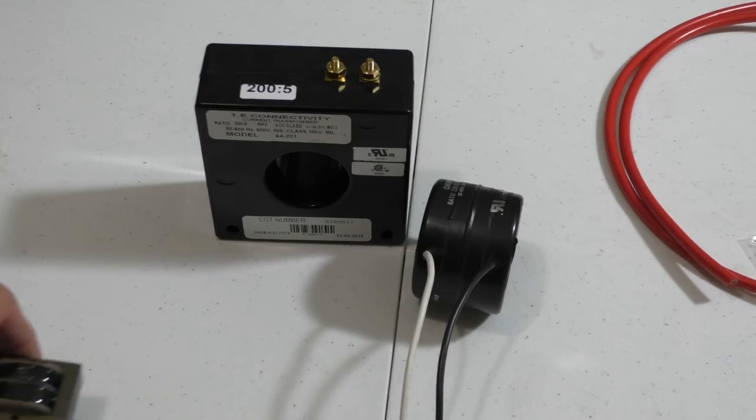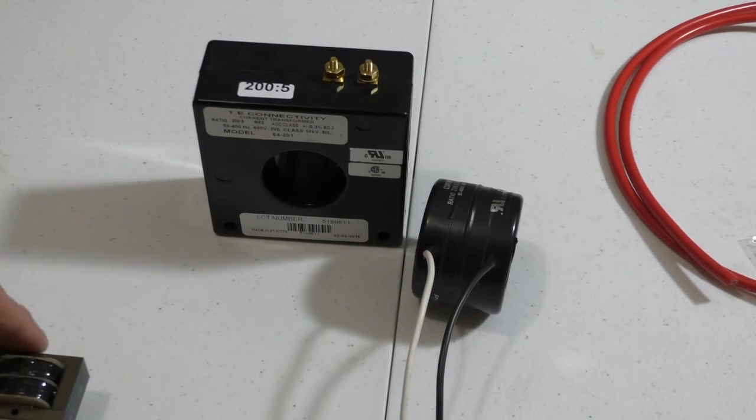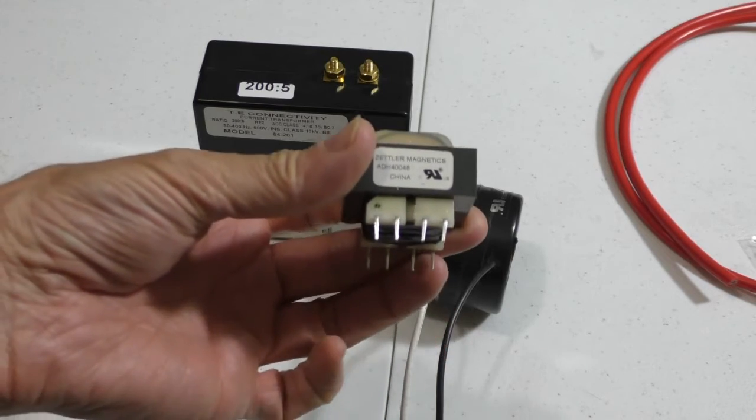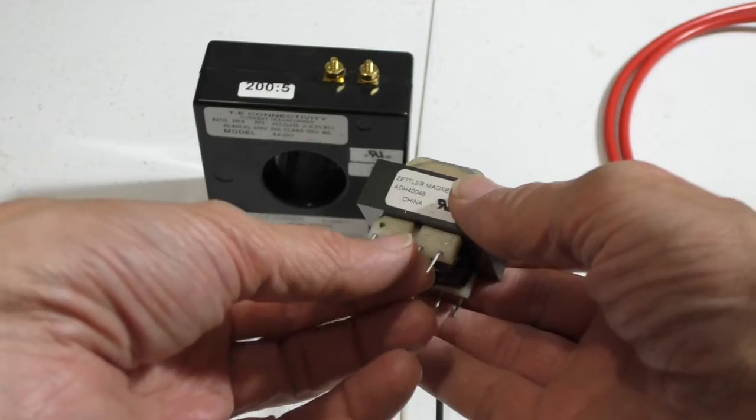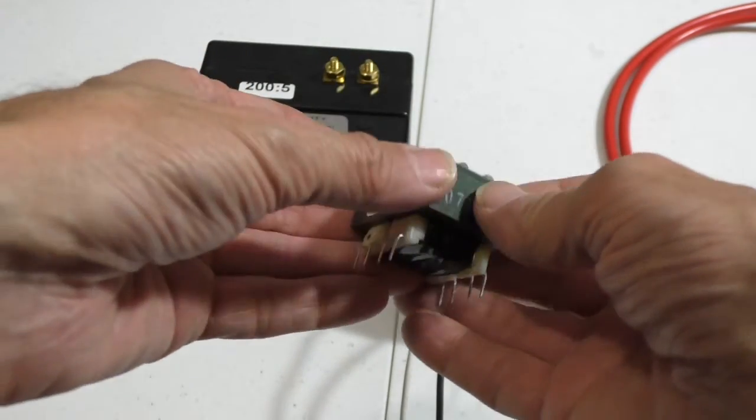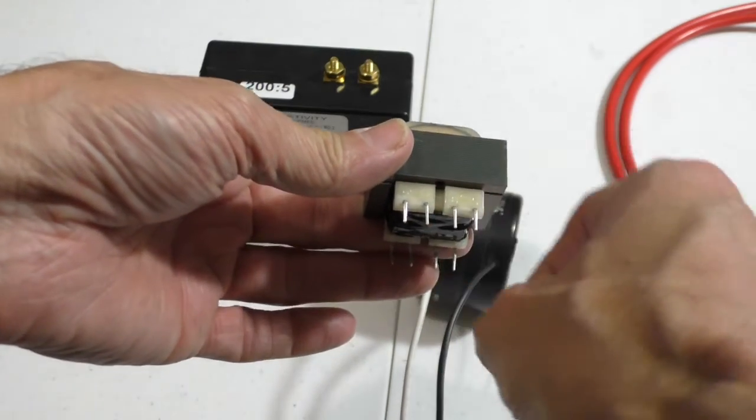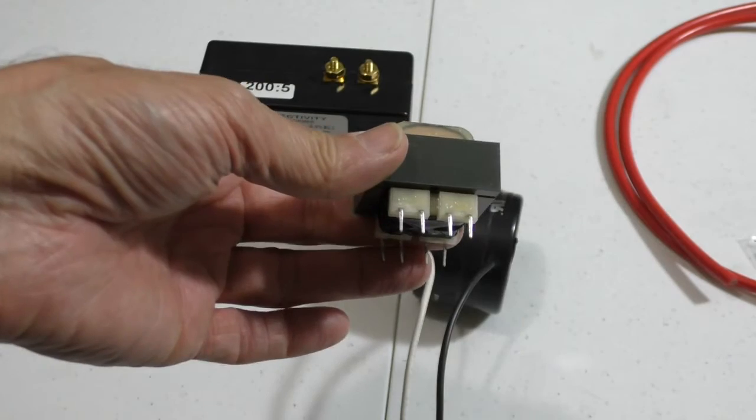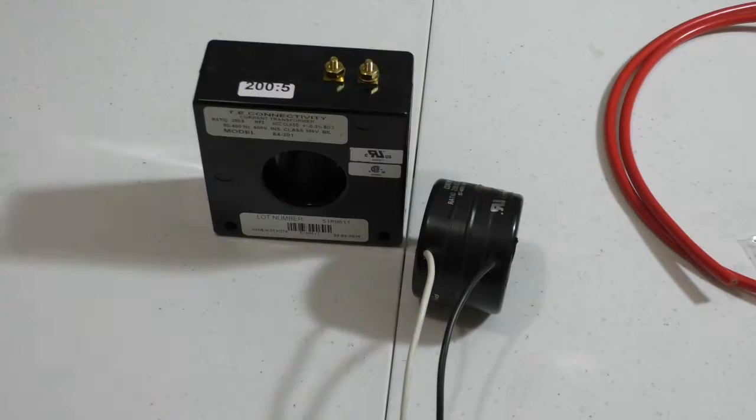Now, how does a current transformer or CT work? It works kind of like a regular transformer works. This is a voltage transformer, but it takes a voltage in which is 120 or 240 and converts it to either 12 volts if you connect them in parallel or 24 volts if you connect them in series. And it doesn't stop pulling current until you hook it up to a load. Now a current transformer...